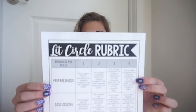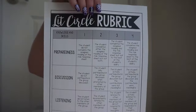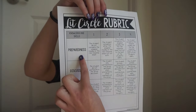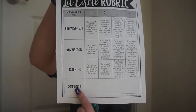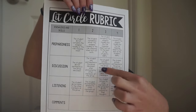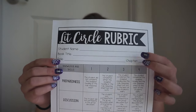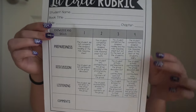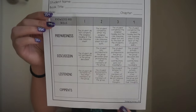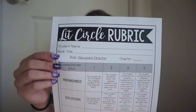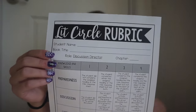The last part of the binder is the rubric. I included a couple of different versions. One is a one-page sheet with all the scoring — categories include preparedness, discussion, listening, and a spot for comments, with a description for each point level. Another version has the same rubric but with a spot at the top to record the student name, book title, role, and chapter, so you just circle the points for each category and leave comments. To save time, I also have a version with the role already filled out.